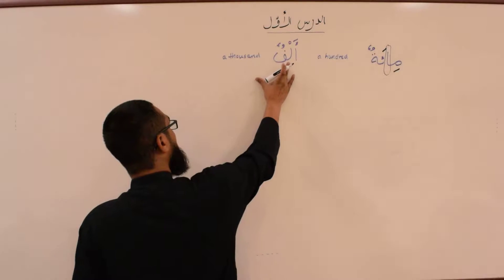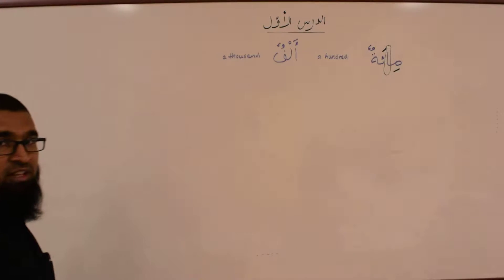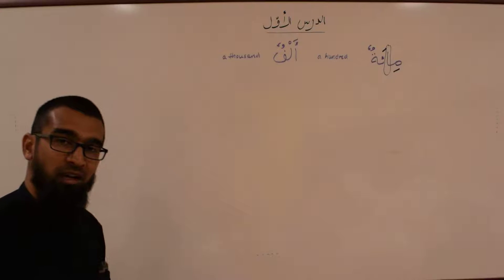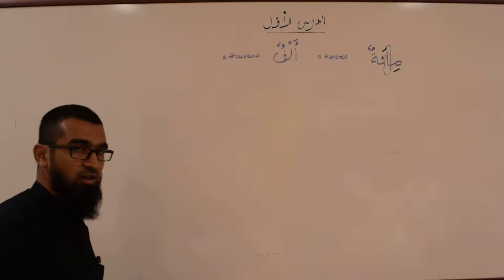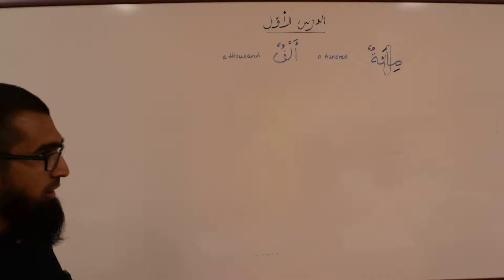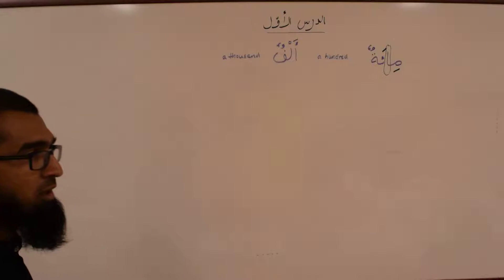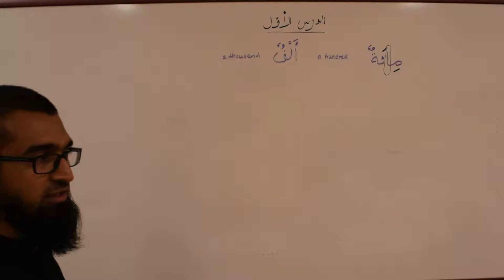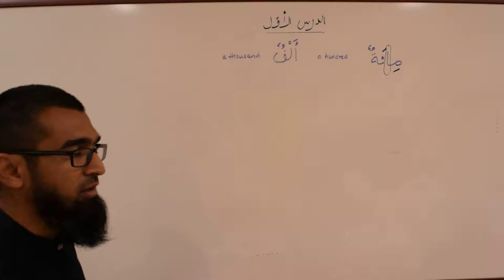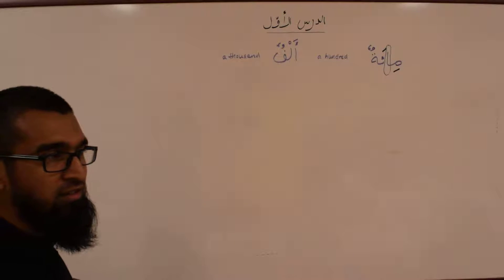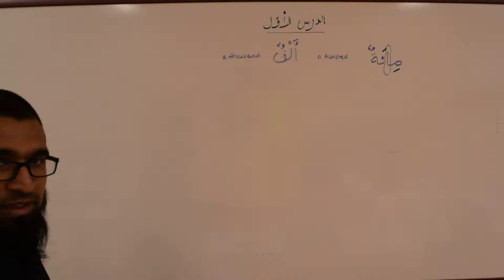And Alfun is a thousand. So how is it used? We learned Al-Adadu wal-Ma'adud — the Adad and Ma'adud — in book one. We learned how to count from three to ten: how to say one pen, one book, two pens, two books, three all the way to ten.